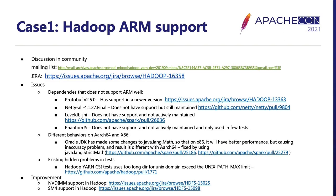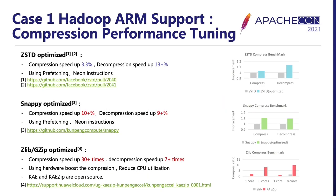The Hadoop ARM CI also helped the Hadoop community identify potential issues in Hadoop itself. We also added two new features to Hadoop: NVDIMM support and the SM4 encryption feature. Additionally, we performed performance testing and tuning of Hadoop on ARM servers.